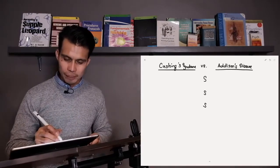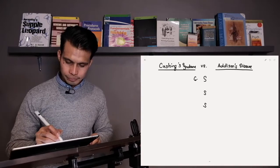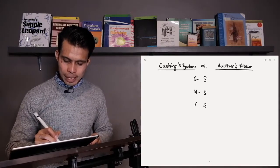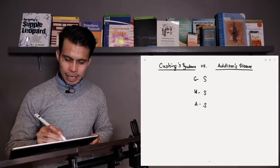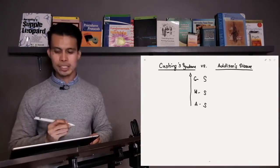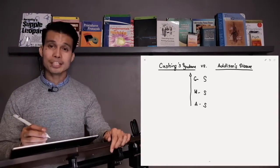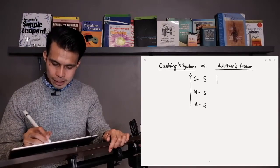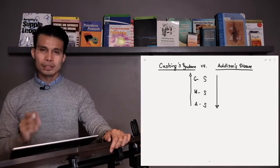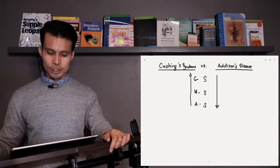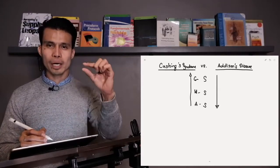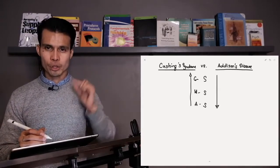So the GMA — glucocorticoids, mineralocorticoids, and androgens — is increased in Cushing's. While in Addison's, the GMA is decreased. If you have decreased glucocorticoids, mineralocorticoids, and androgens, you also expect a decrease in sugar, salt, and sex hormones.